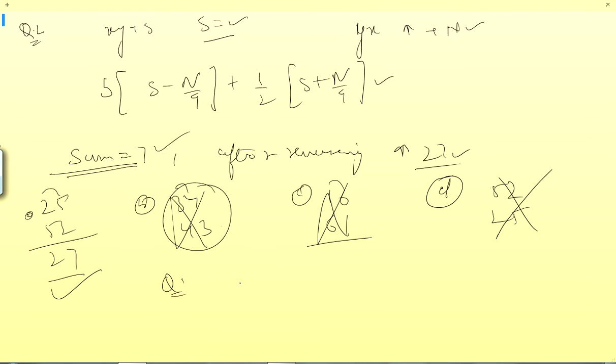Question for trying is, sum is given to be 5. Sum is 5 and after the interchange, the digits, after interchanging the digits, the number increases by 27. And options are 23, 32, 14, 41. Try out the question. It's very easy.